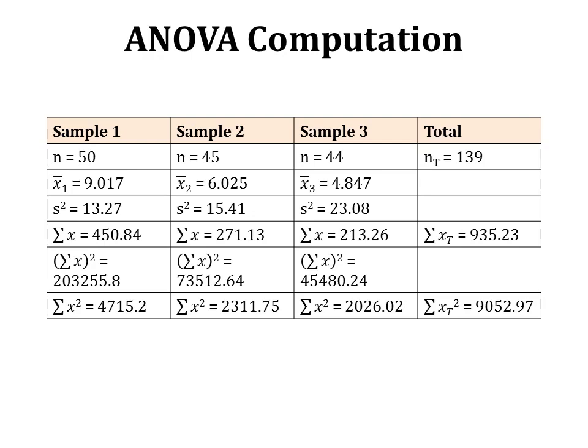The mean otolith diameter for sample 1 is 9.017 mm, for sample 2 it is 6.025 mm, and for sample 3 it is 4.847 mm. The variance for sample 1 is 13.27, for sample 2 is 15.41, and for sample 3 is 23.08.